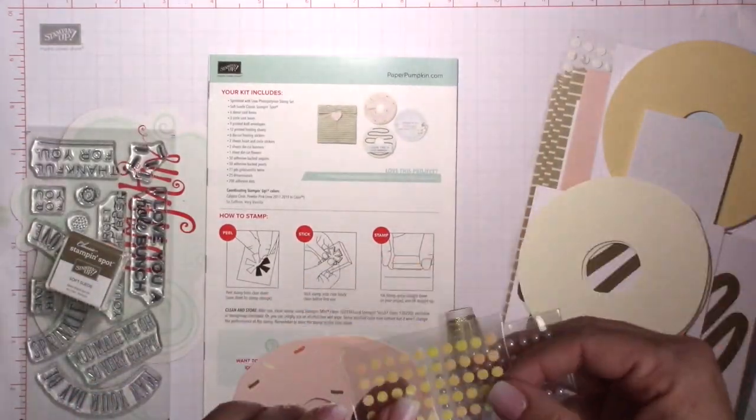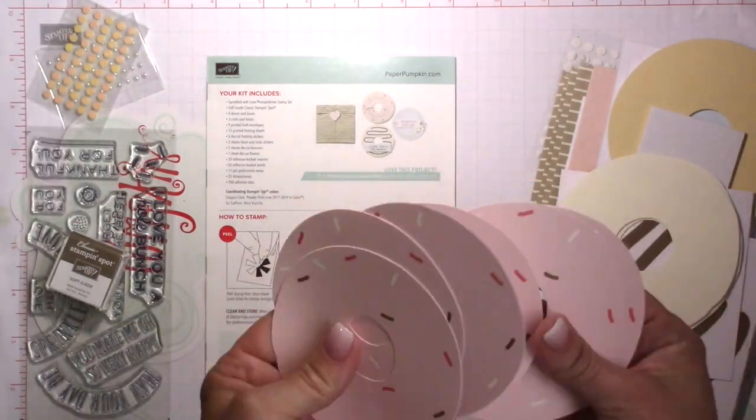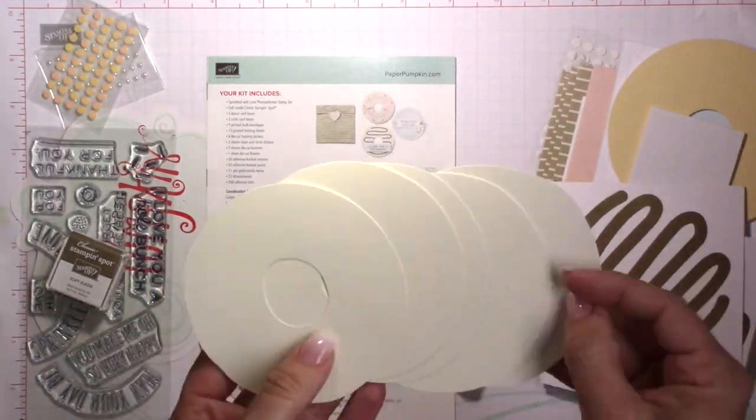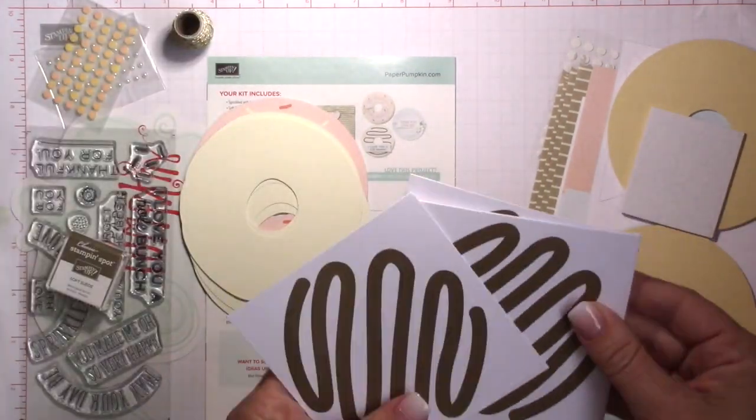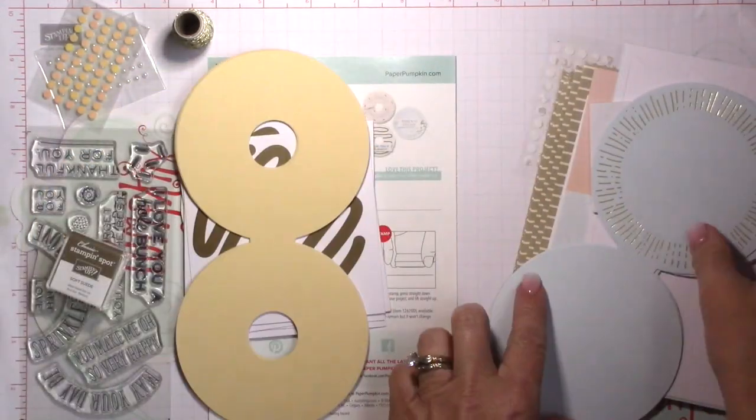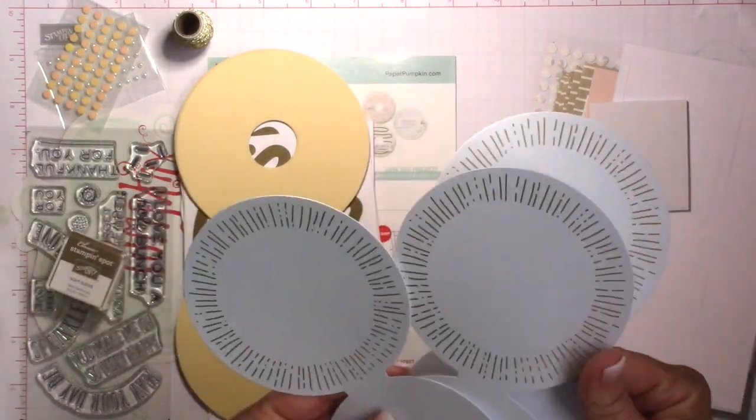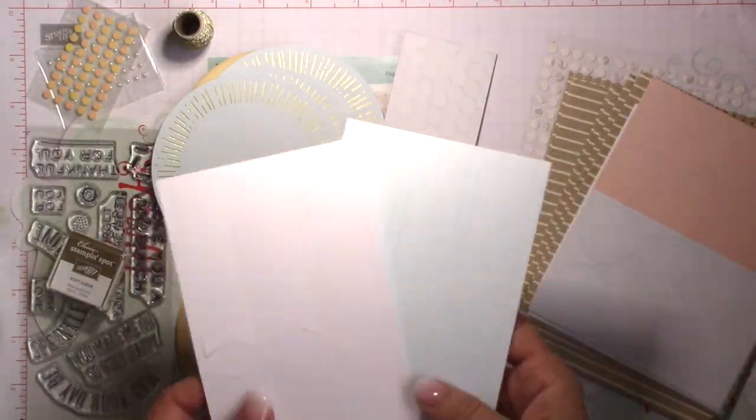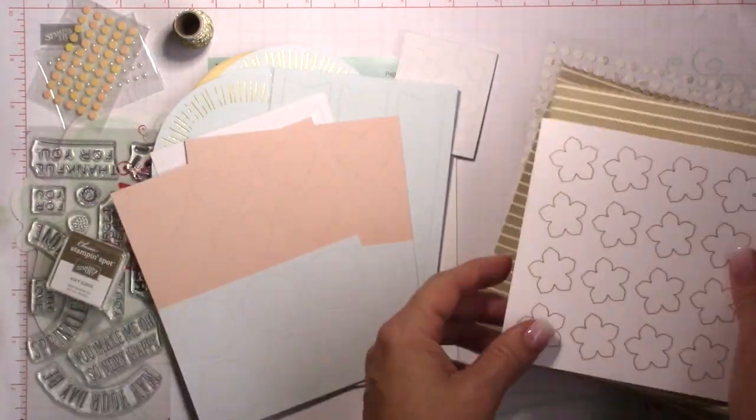So here I'm just going to speed up and just show you all the elements that came in this kit. It's called Sprinkled with Love and it's these adorable little doughnuts. So we've got three different card bases and that one's a really pretty Soft Sky with gold foil, some labels for the envelopes, and these cute little flowers.